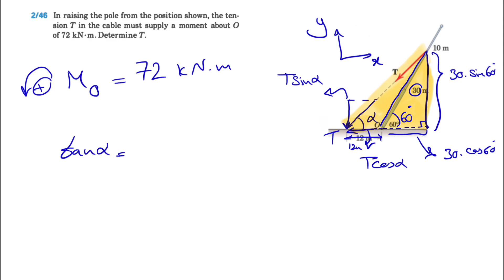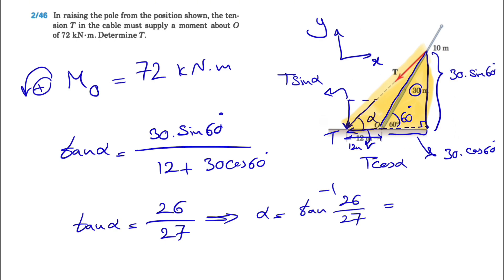So if you do the tangent of alpha, we basically have the opposite, which is 30 times sine of 60 degrees over 12 plus 30 cosine of 60 degrees. So if we find the tangent of alpha, we get in the numerator 26. And the denominator, we know the cosine of 60 is 0.5. So 30 divided by 2 is 15 plus 12, 27. And from here, alpha would be the tangent inverse of 26 over 27, which if we calculate this with the calculator, we get 43.9 degrees.